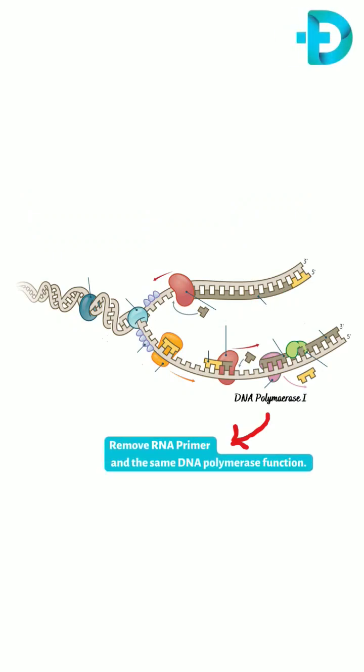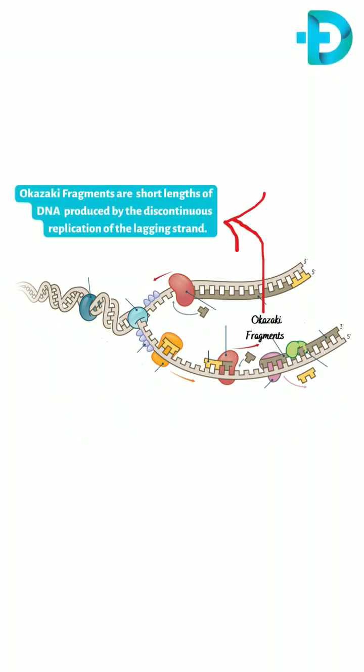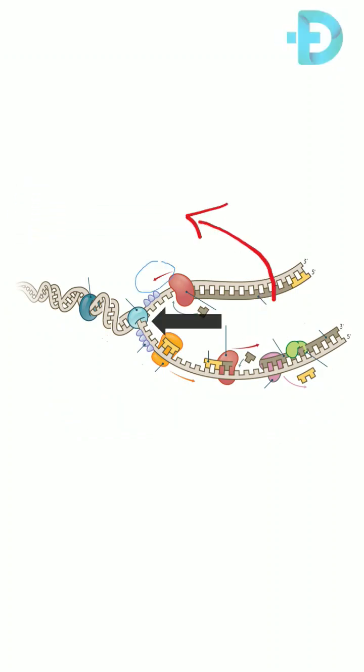DNA polymerase I removes RNA primer template and replaces it with DNA. DNA ligase joins the Okazaki fragments. Okazaki fragments are short lengths of DNA located at the lagging strand.